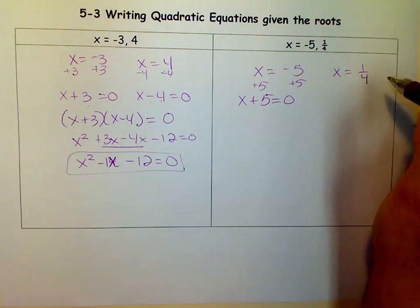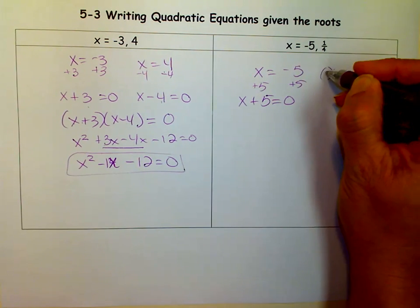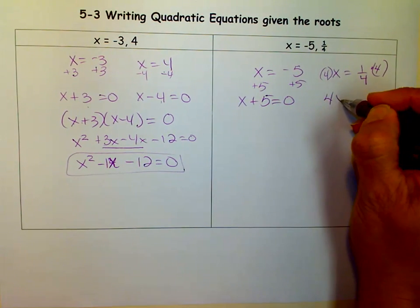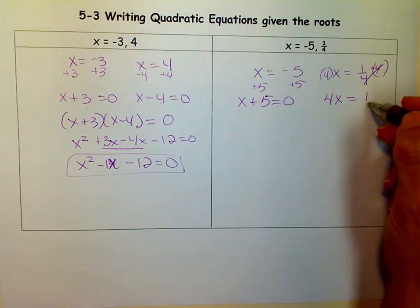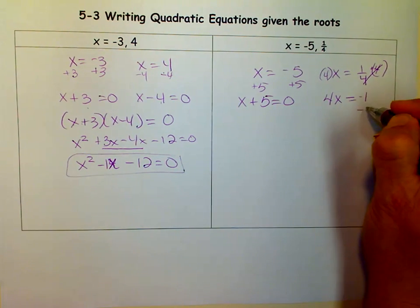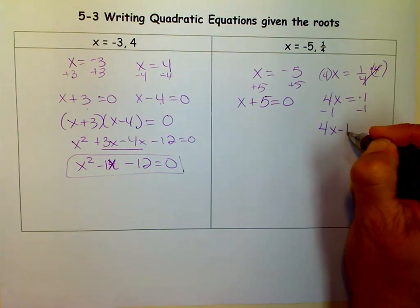Notice I don't want to just add 1 fourth. I want to get rid of that fraction. So to get rid of the fraction, I'd multiply both sides by 4. So now I'd have 4x equals 1 because those would cancel out. And then that's when I minus. So that's minus 1 for both sides. So I'd actually get 4x minus 1 equals 0.